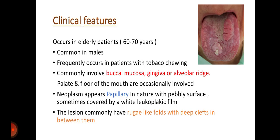Let's focus on the clinical features. Verrucous carcinoma occurs in elderly patients, with a mean age of occurrence being 60 to 70 years. It is more common in males and frequently occurs in patients with tobacco chewing habits. Commonly involved areas are the buccal mucosa, gingiva, and alveolar ridge. The palate and floor of the mouth are occasionally involved.